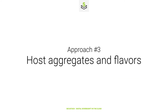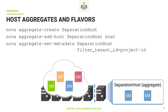Approach number 3: host aggregates and flavors. Another way to dedicate a single node to a project in OpenStack is using a combination of aggregates and flavors. We first create a new aggregate and add a host to it — this compute host will be dedicated to our blue project. This is not sufficient alone; we also need to add a metadata key-value pair to indicate which tenant should only be able to spawn VMs on this host. This is done with the filter tenant ID equals project ID, where we add the project ID of the blue project. The Nova scheduler will now check this aggregate and only allow blue VMs to be spawned on the dedicated host. The far right compute node is in the host aggregate separation host and only instances of the blue project will be spawned there.